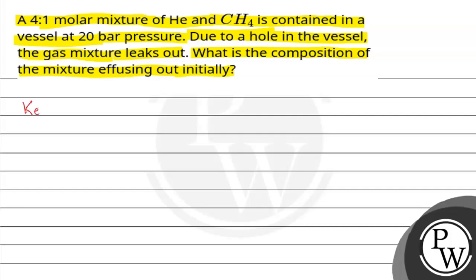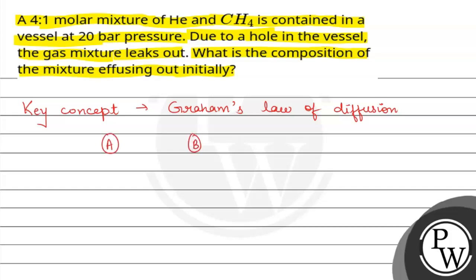The key concept here is Graham's Law of Diffusion. Graham's Law of Diffusion for gases states: the rate of diffusion of gas A to the rate of diffusion of gas B is equal to partial pressure of gas A upon partial pressure of gas B, multiplied by the square root of molar mass of gas B upon molar mass of gas A, when the time of diffusion is the same.